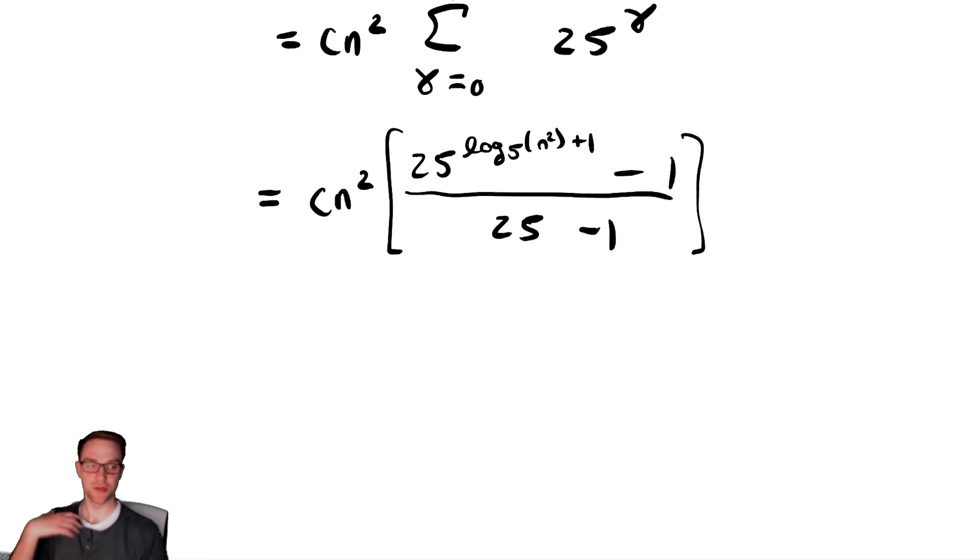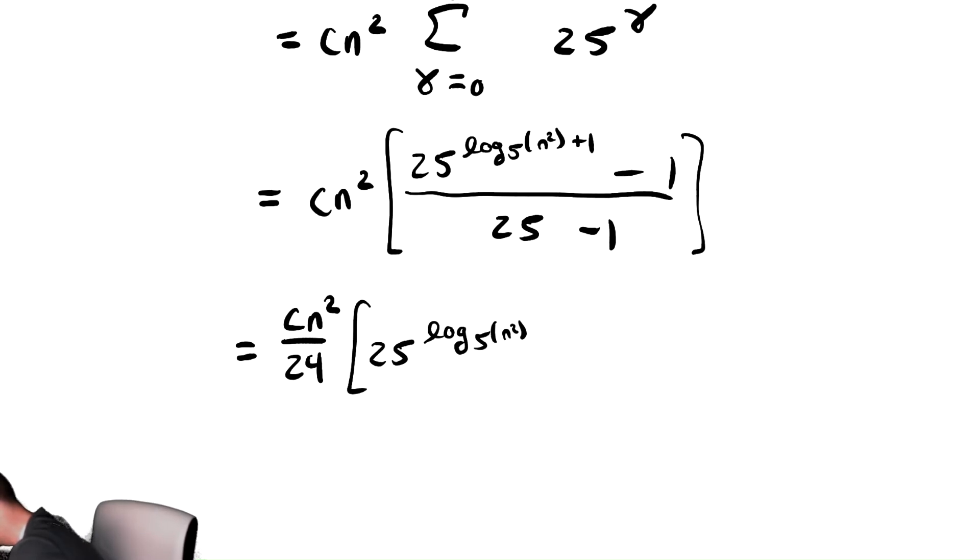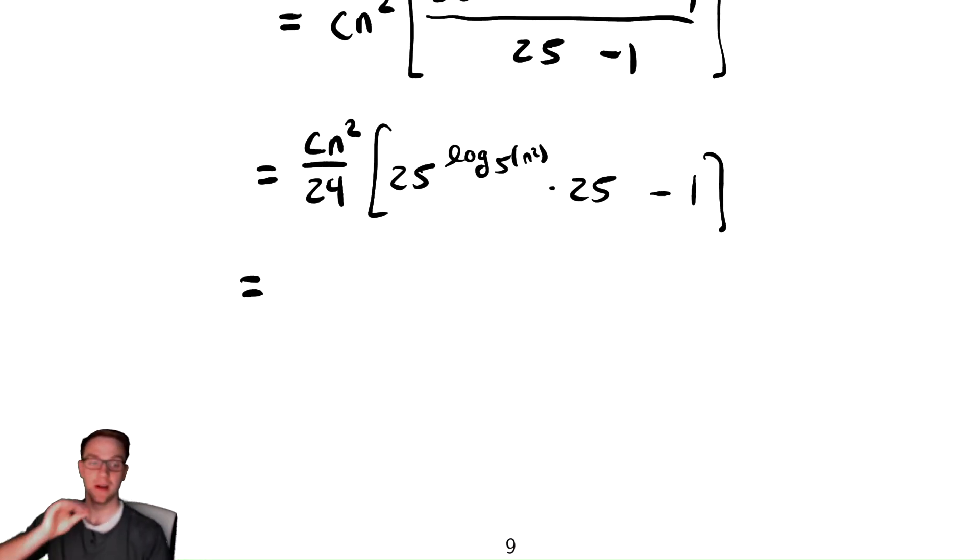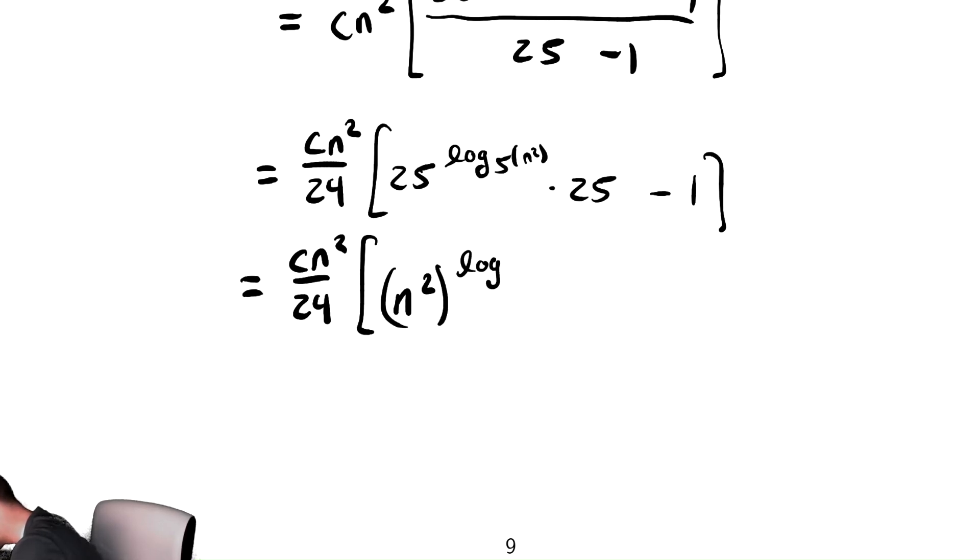And now I need to just do algebra to simplify this to try to determine the complexity. This is a closed form expression, we weren't bounding, so all we need to do is work our way down to a closed form expression. This is equal to 25 minus 1 is 24, so I've got cn squared divided by 24 times, I'll rewrite this as 25 to the log base 5 of n squared times 25 to the 1, minus 1. I can now use a very handy log trick that will show up a bunch of times while we analyze while loops and recurrences. So I'm going to keep everything the same, but with that 25 to the log 5 of n squared, you can actually swap the base of the exponent with the inside of the log. So I can write this as n squared to the log base 5 of 25 times 25, then minus 1.